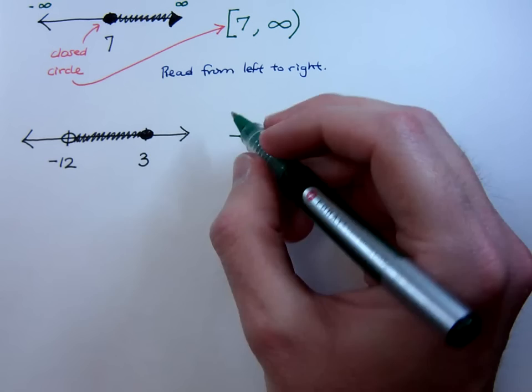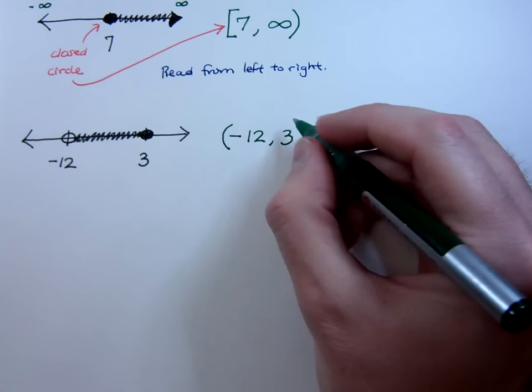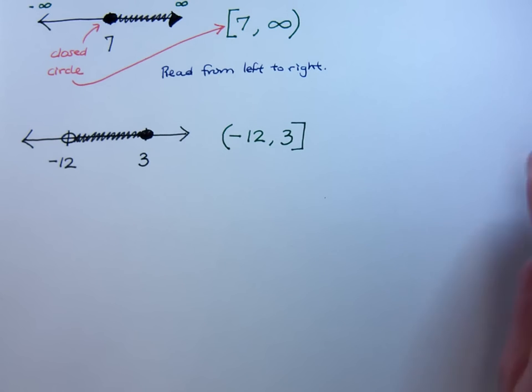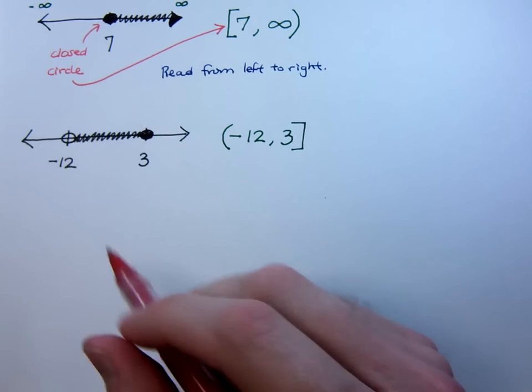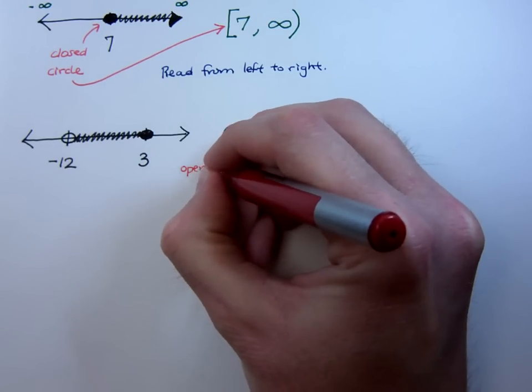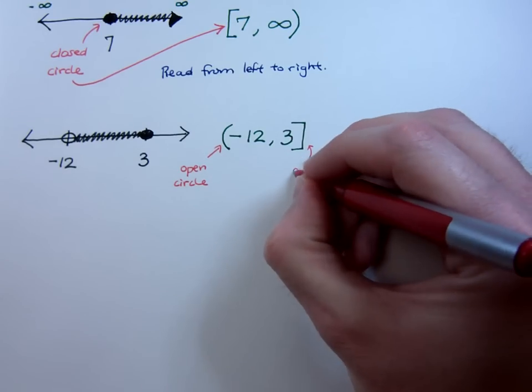When we write this using interval notation, you always go from left to right. So as I go from left to right, I'm coming from negative 12, I get to 3, and then I'm going to stop at 3. Having the open circle means I'm going to use parentheses. Having the closed circle means I'm going to use a bracket.